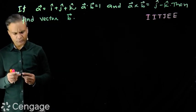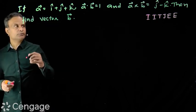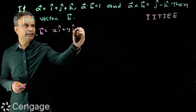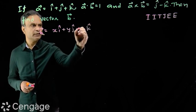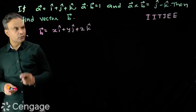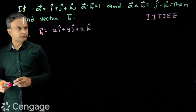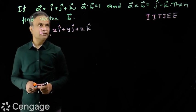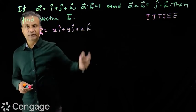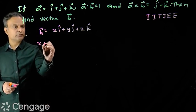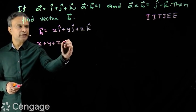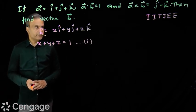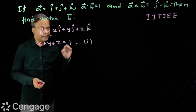We suppose vector b is x*i plus y*j plus z*k. We will try to get the values of x, y, z by forming equations. From a dot b equals 1, we get the first equation: x plus y plus z equals 1. This is equation number 1.